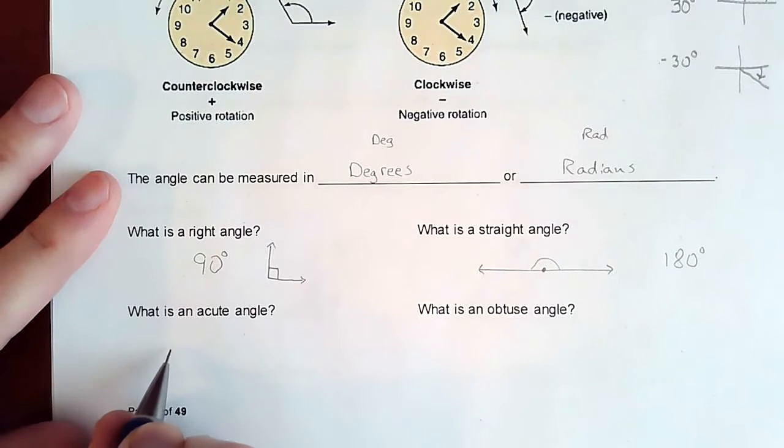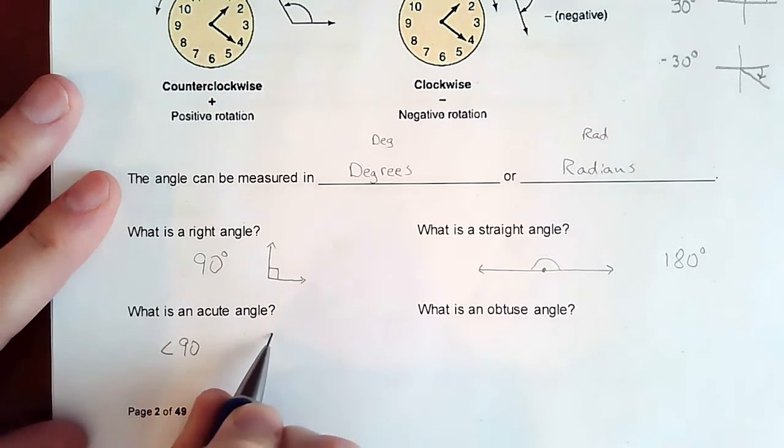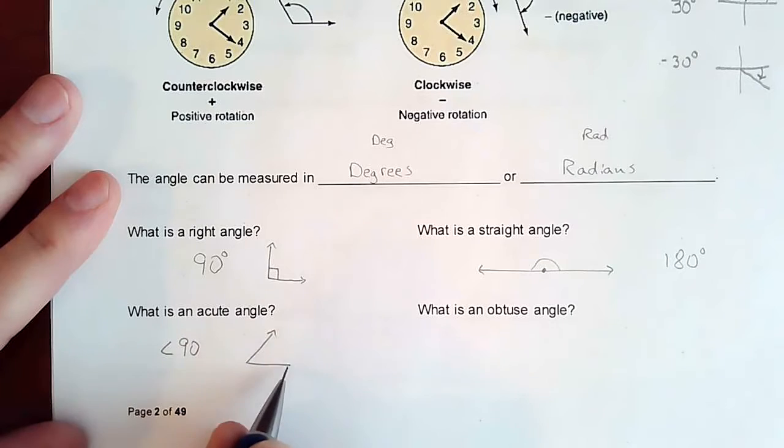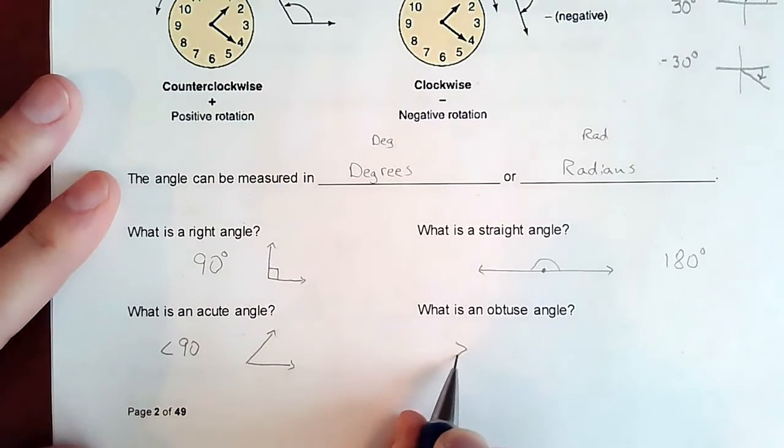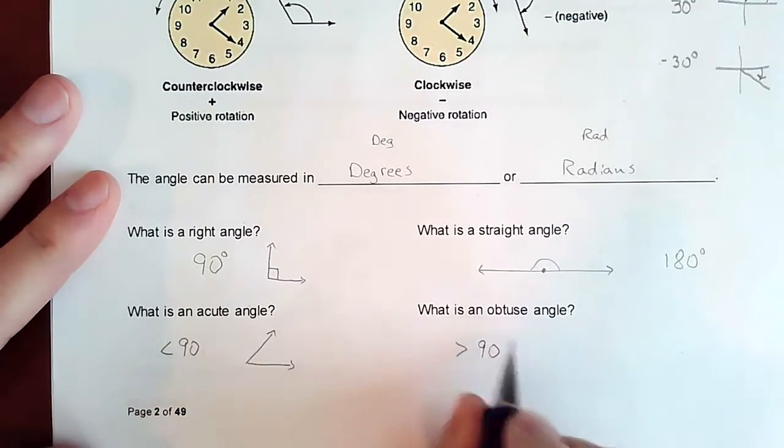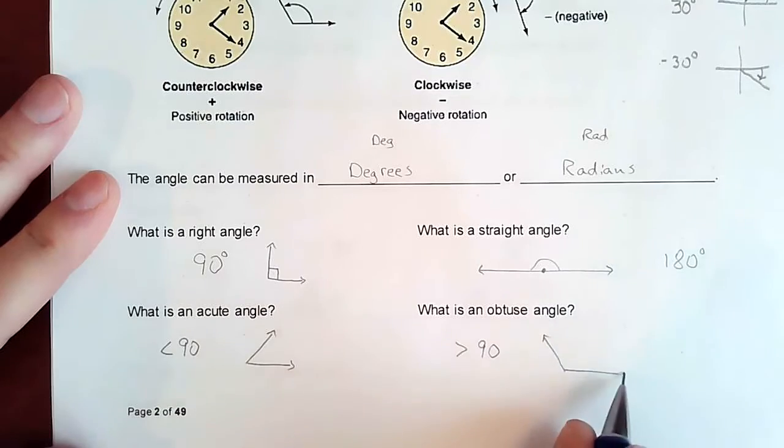An acute angle is a smaller angle. So something that is less than 90 degrees would be an acute angle, and something greater than 90 degrees is an obtuse angle. So something maybe like that.